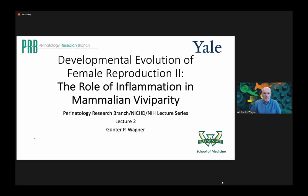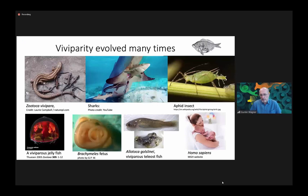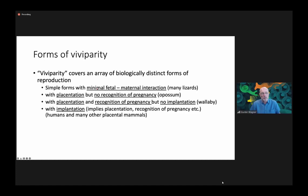I argued that viviparity is a phenomenon that evolved many, many times in animals, all the way from jellyfish to humans. This wide variety of origins and realizations of viviparity also comes with very different forms of viviparity that we need to distinguish in order to understand the biology better. In a very quick overview, you can distinguish four major forms.